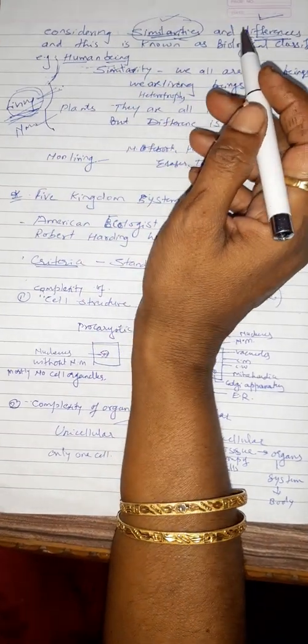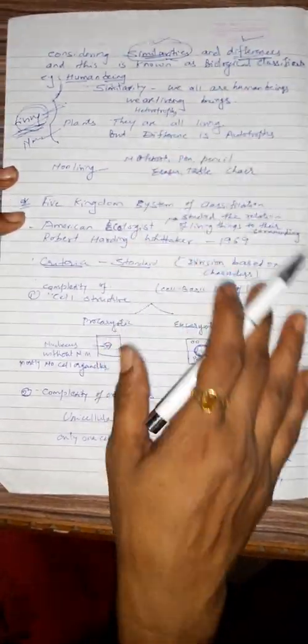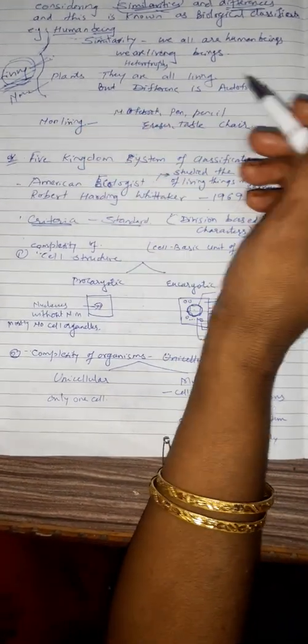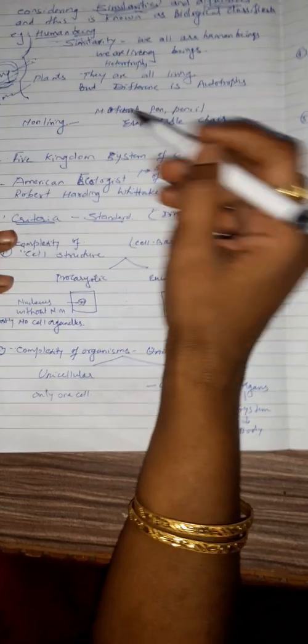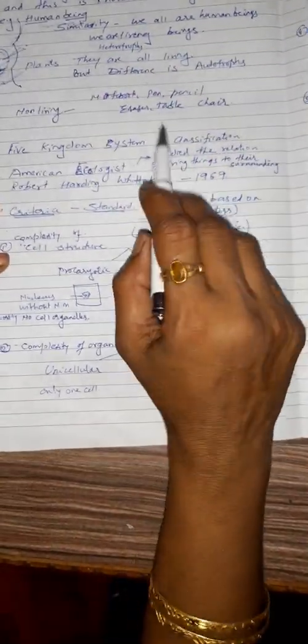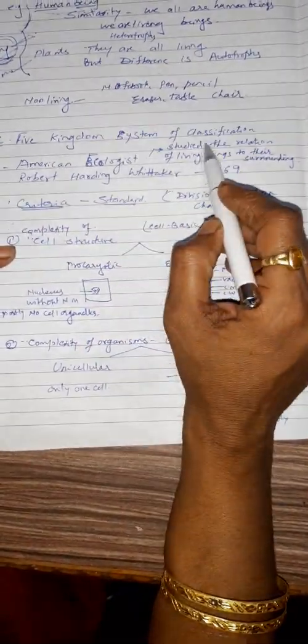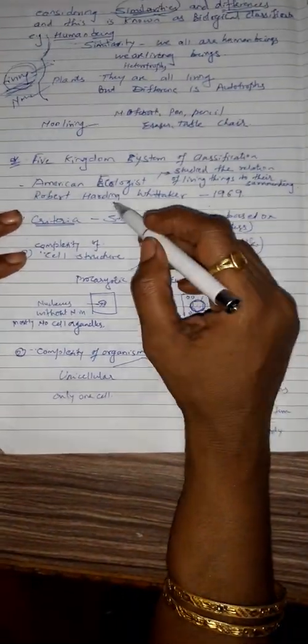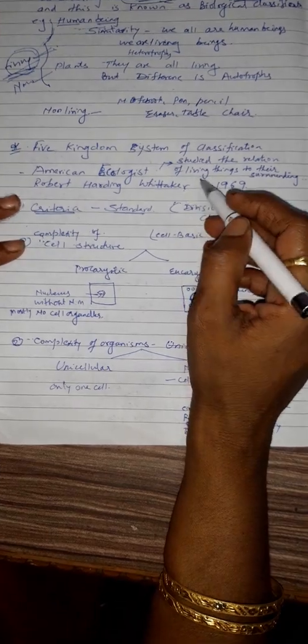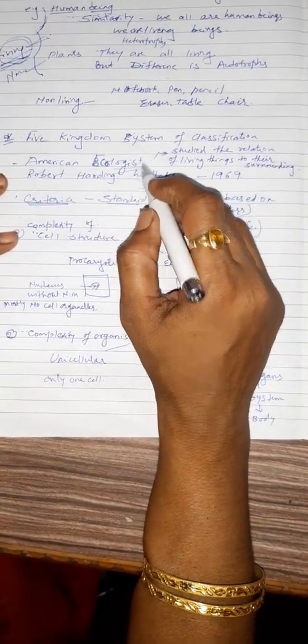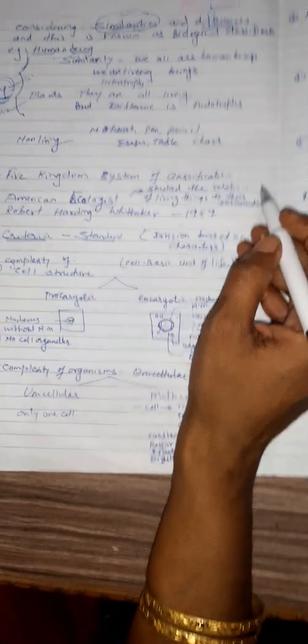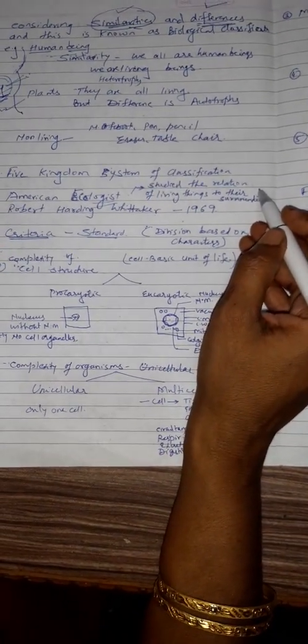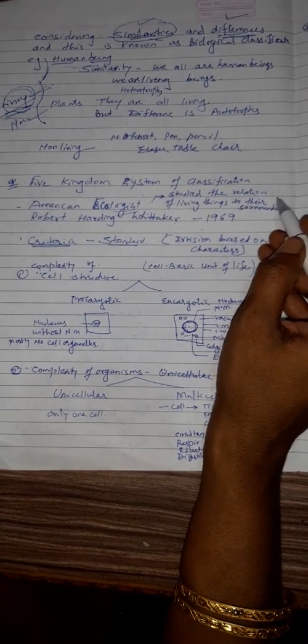And non-living things, your notebook, pen, pencil, they come in different groups. Now who did this classification of this living world? Five Kingdom system of classification. It was done by an American ecologist, Robert Harding Whittaker. What he was studying? What is the meaning of ecologist? Ecologist means he was studying the relationship of the living organism and his surrounding. Only human being the living organism and their nature.